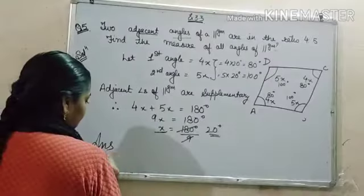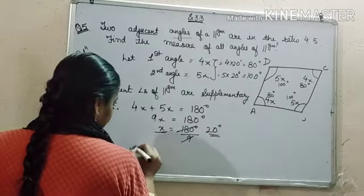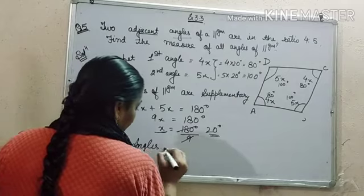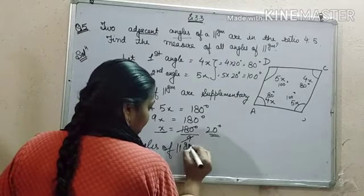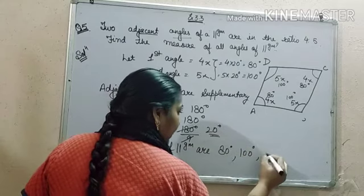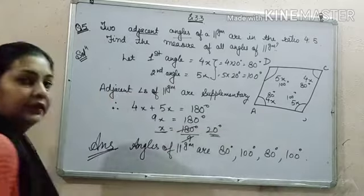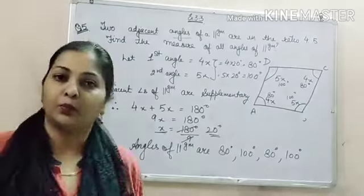So you can write your answer as angles of parallelogram are 80 degrees, 100 degrees, again 80 degrees and 100 degrees. That solves our problem.